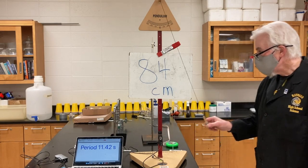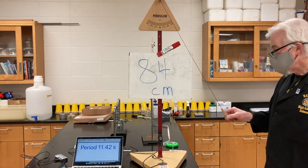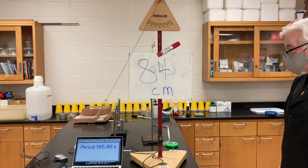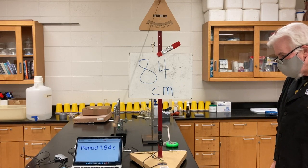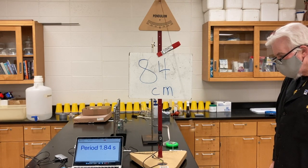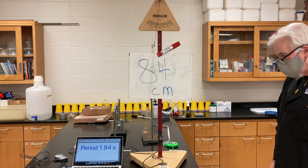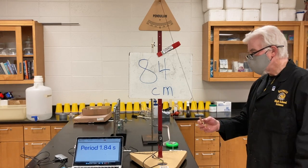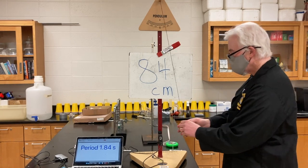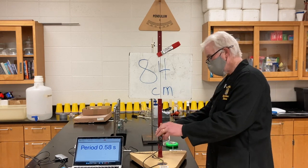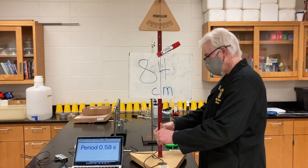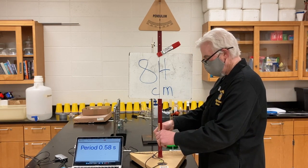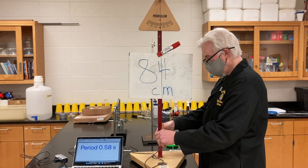On the sign here, I have the length written — it's 84 centimeters. And you can see that my laptop screen is showing the period. Now the period is always going to be wrong at first, and then it'll settle into a more reasonable value — you'll be able to tell. So that was 84 centimeters, and it looked like about 1.84 seconds was the period.